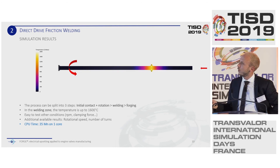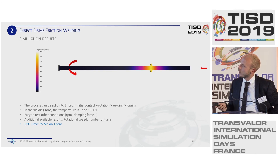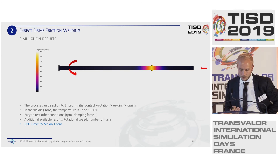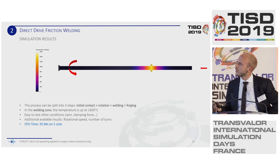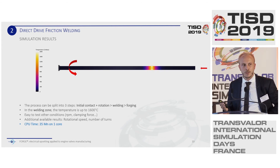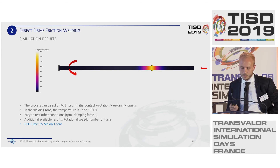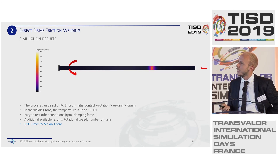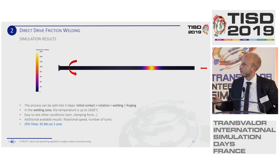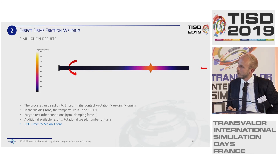For the results, you have the illustration of the temperature evolution during friction welding. You can see the three different steps: the initial contact rotation, then welding, then forging. In the welding zone, we reach a temperature of 1600 degrees. It is relatively easy to test other conditions — for example, you can easily copy your setup and change the rotation speed or clamping force to see their influence on the weld zone. After the simulation, you can analyze results such as rotational speed or number of turns. This first operation took 35 minutes on one core.